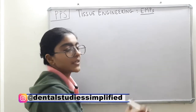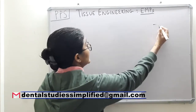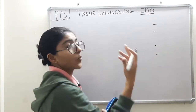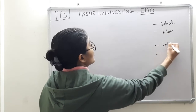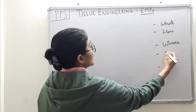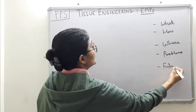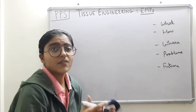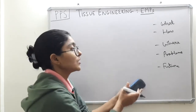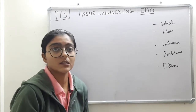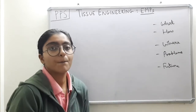Talking about EMPs, we will first start with enamel matrix proteins. In this topic we will deal with a few subheadings: what are they and how they work, clinical application — that is where they are used — any drawbacks or complications, and what is the future. Although it is a validated product, the future here denotes what other periodontal therapy we can use enamel matrix proteins in.